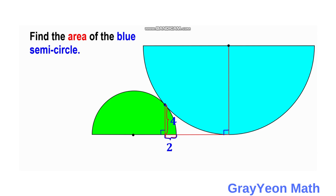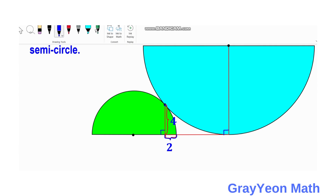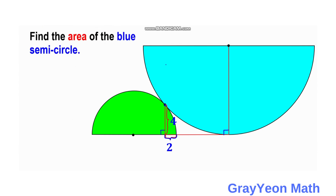First, I want you to see the bigger picture. We can actually draw a line from the center of the bigger semi-circle to the tangent point and towards the center of this green semi-circle. This is a straight line because they are mutually tangent at this point. So we can see a big right triangle.